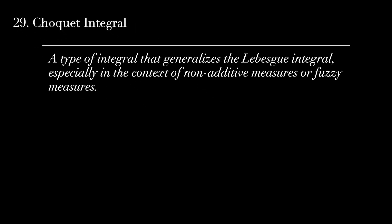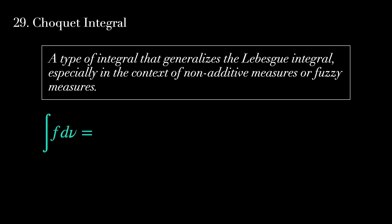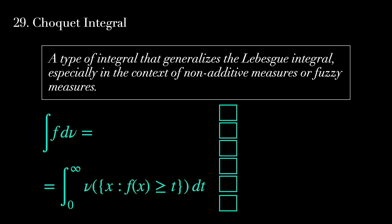29. Choquet integral. A type of integral that generalizes the Lebesgue integral, especially in the context of non-additive measures or fuzzy measures.